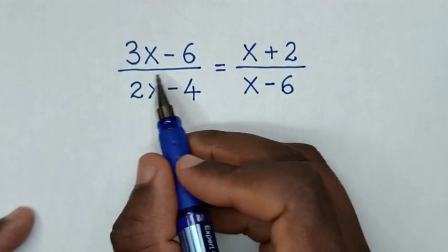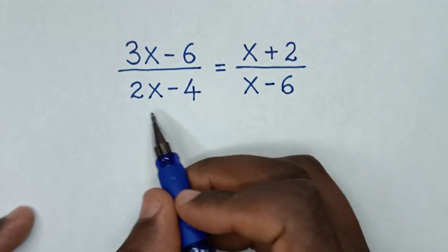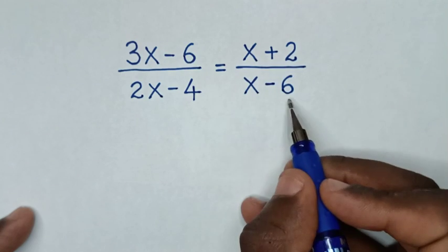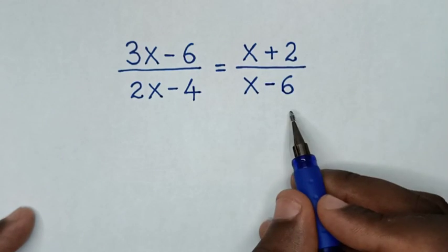Hello! How to solve 3x minus 6 over 2x minus 4 is equal to x plus 2 over x minus 6 to find the value of x from this equation.